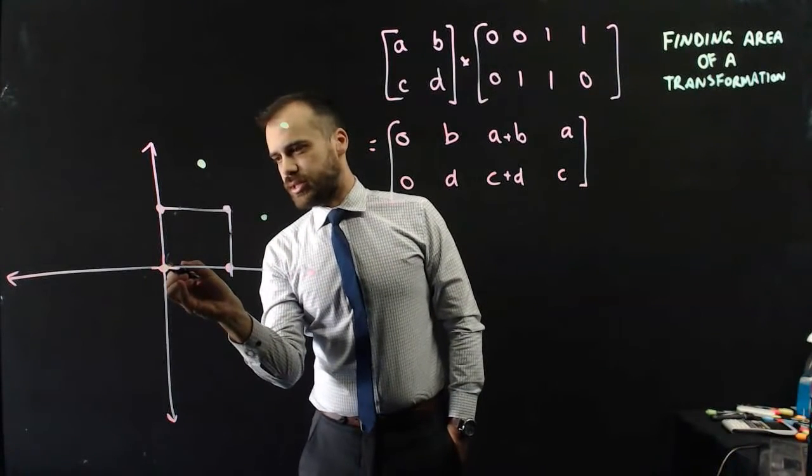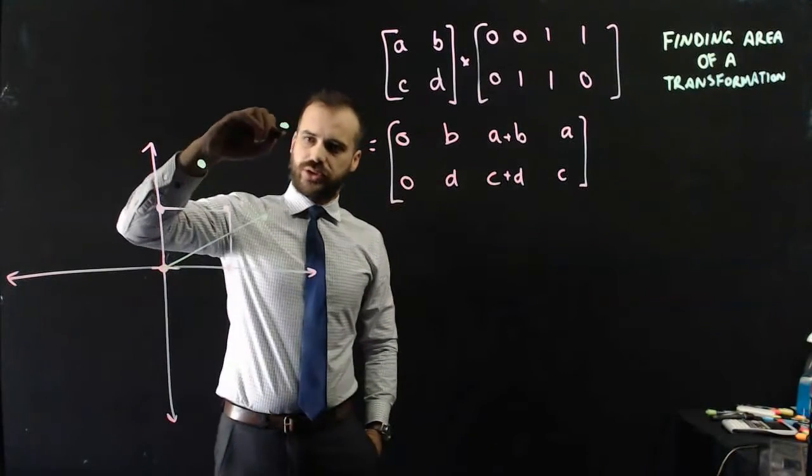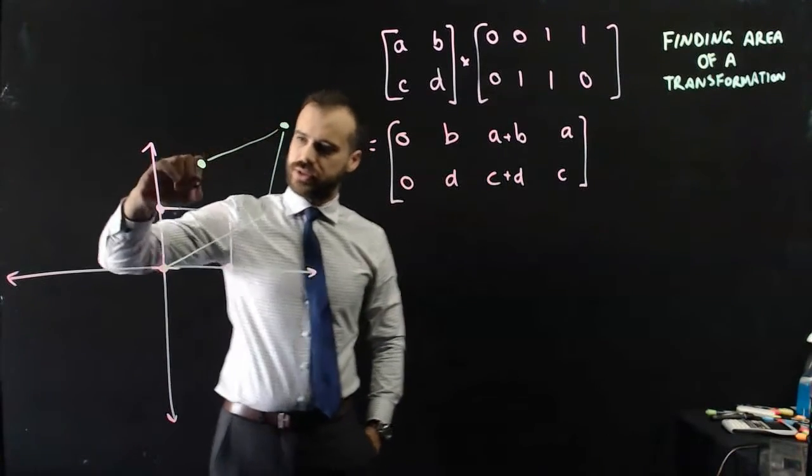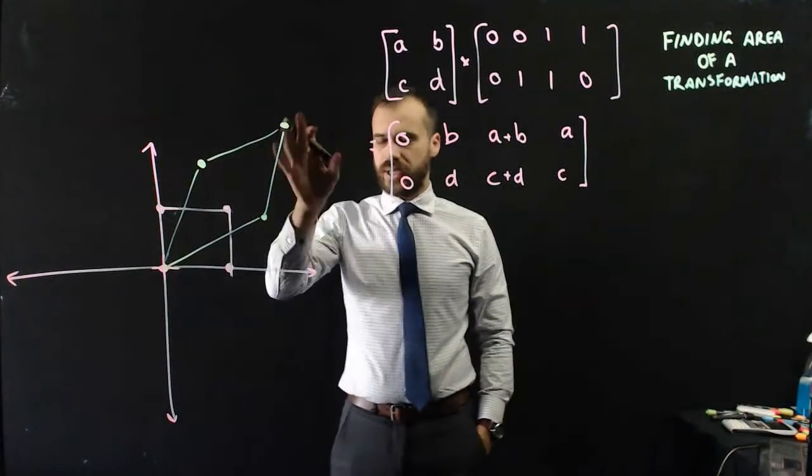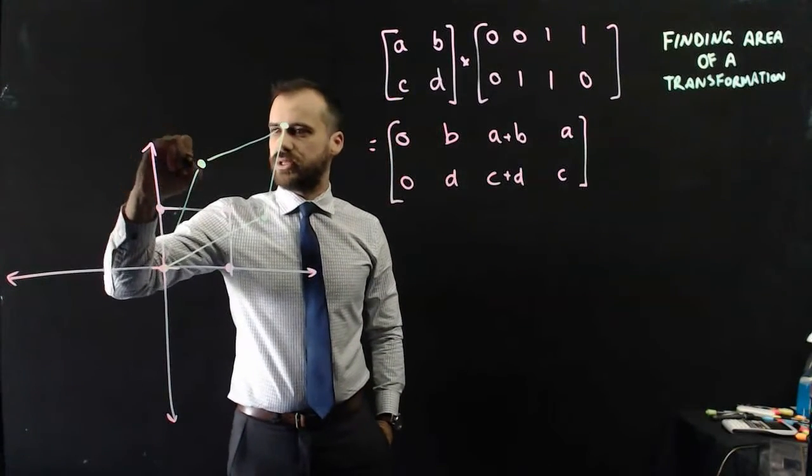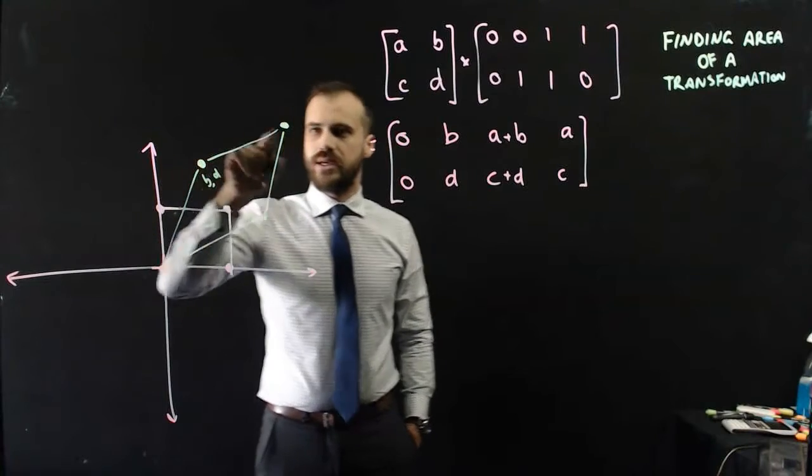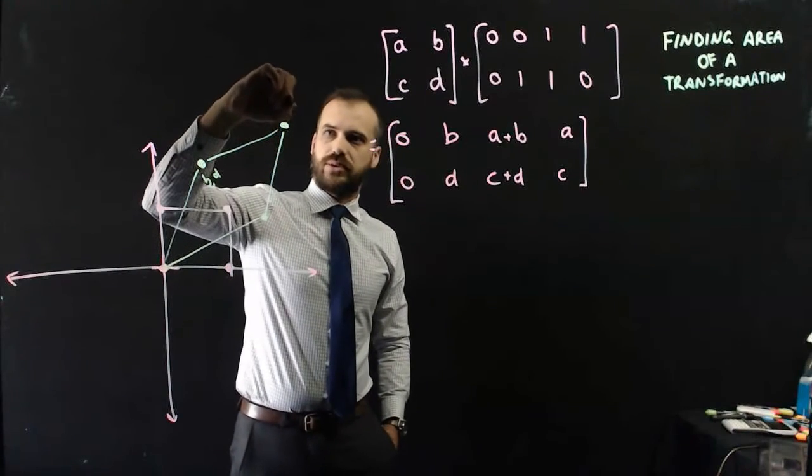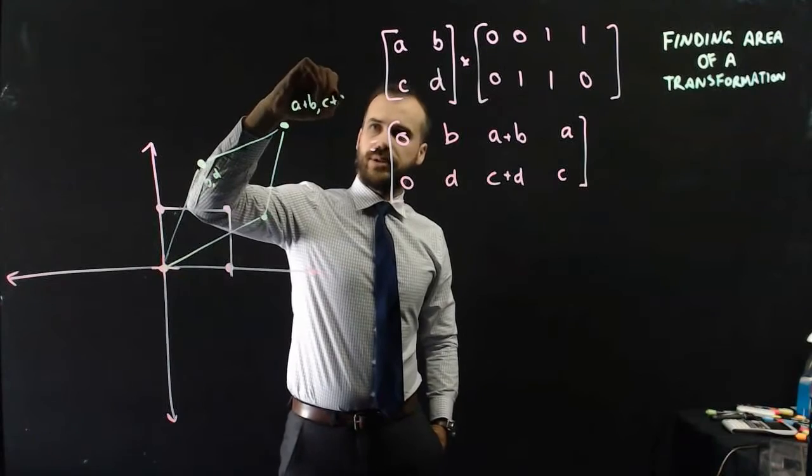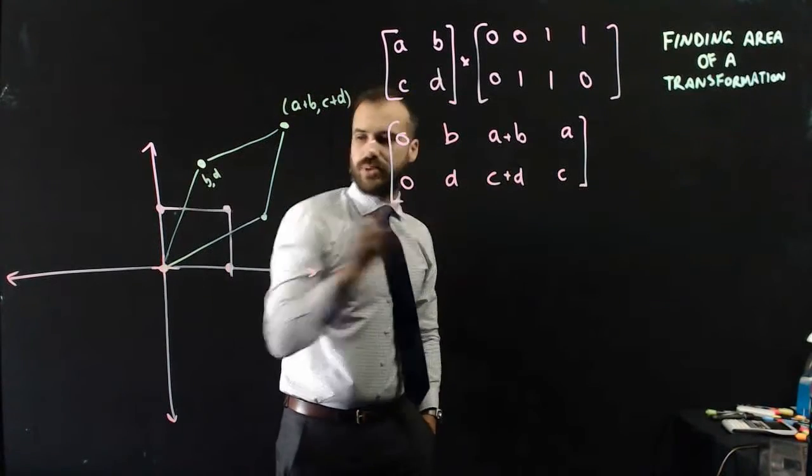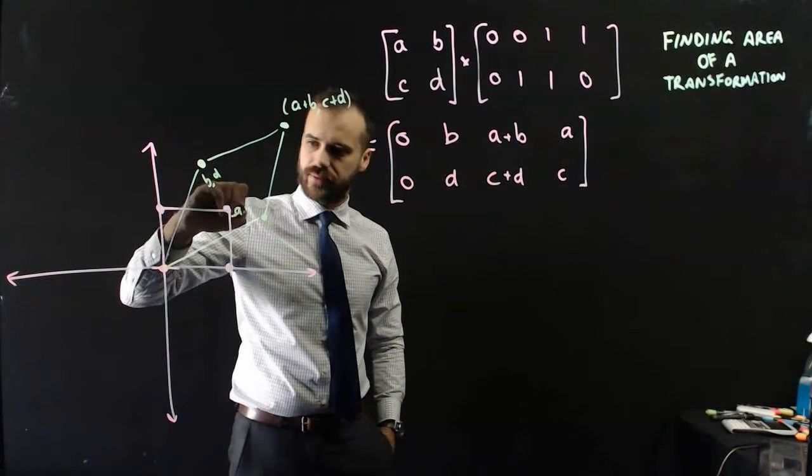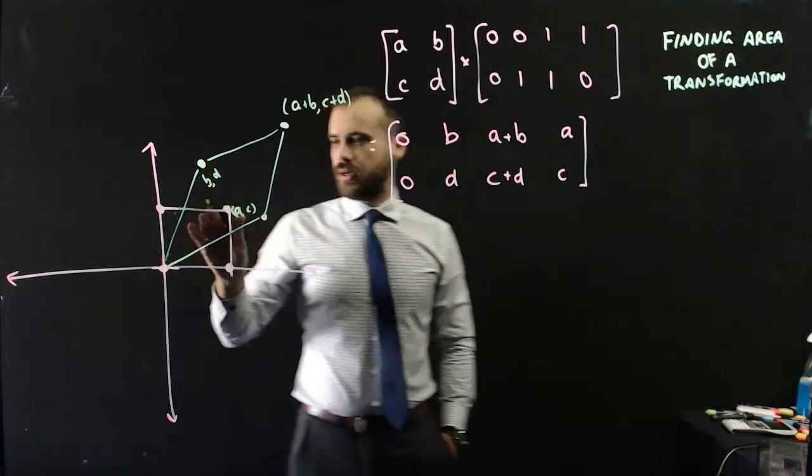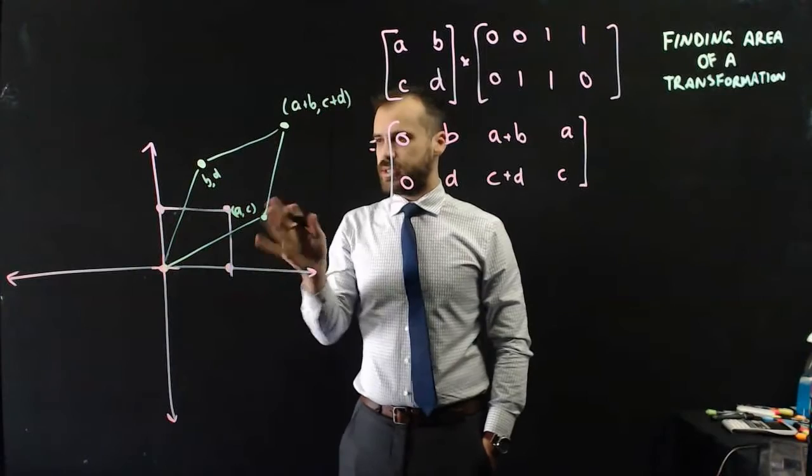Now the result is something special, or should be close to something special. We get a parallelogram, and we can label up these points. So that's point B, D. This is point A plus B, C plus D. And this is point A, C. All right, so we've got our new points there.